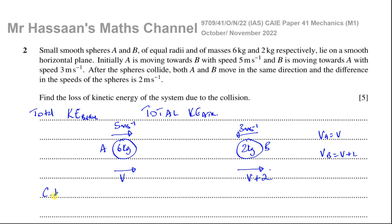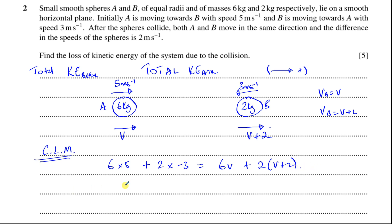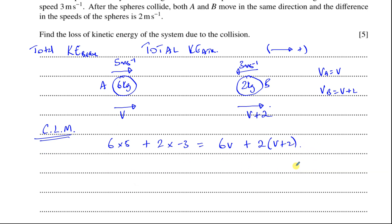Using conservation of linear momentum, the total momentum before equals the total momentum after. Taking right as positive: before the collision we have six times five plus two times negative three, because B is moving in the opposite direction. This equals six times v plus two times (v plus two). Simplifying: 30 minus 6 equals 6v plus 2v plus 4.